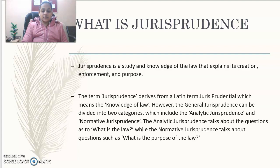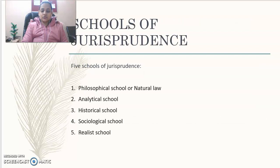To understand the concept of law, it is important to understand the different schools of jurisprudence. There are mainly five schools of jurisprudence: the philosophical school or natural law school, the analytical or positivist school, the historical school, the sociological school, and the realist school of jurisprudence.